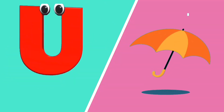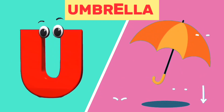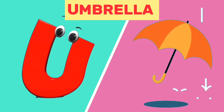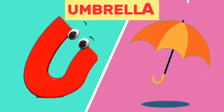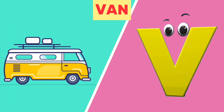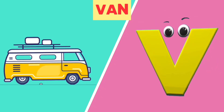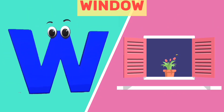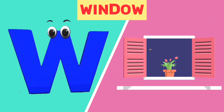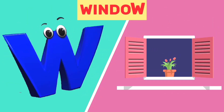U is for umbrella. U, umbrella. V is for van. V, van. W is for window. W, window.